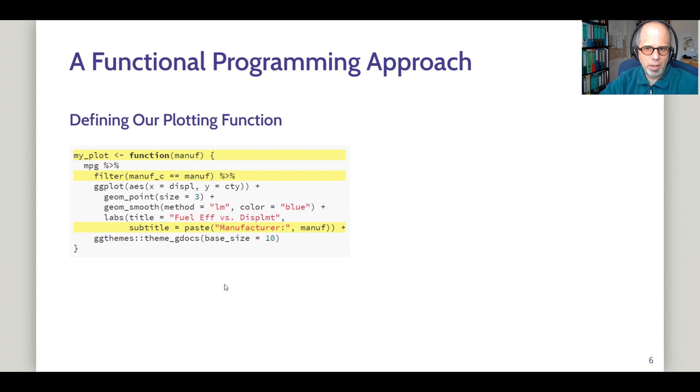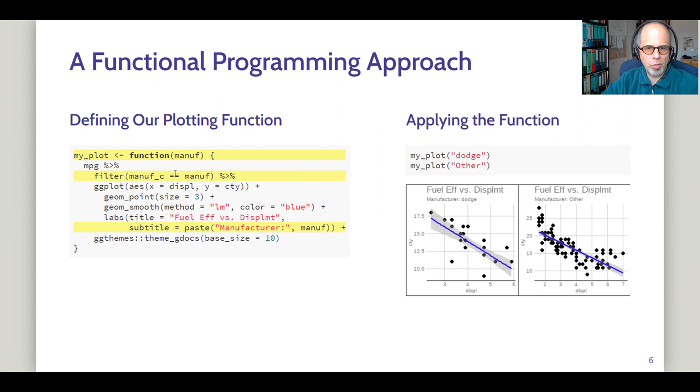We can use a one-liner to replace the for loop. But before we do that we switch to a functional programming approach which means that we define our own plotting function. So I do that here and instead of iterating over the vector using this iterator i, I use a function parameter that I call manufacturer. We use that to filter the data again and we also use that to create the subtitle. So now we have a user defined function that we can call passing a manufacturer to create the plots. I call the function and I provide the manufacturer as a string and then the plot is created. The saving code is now excluded from the function.